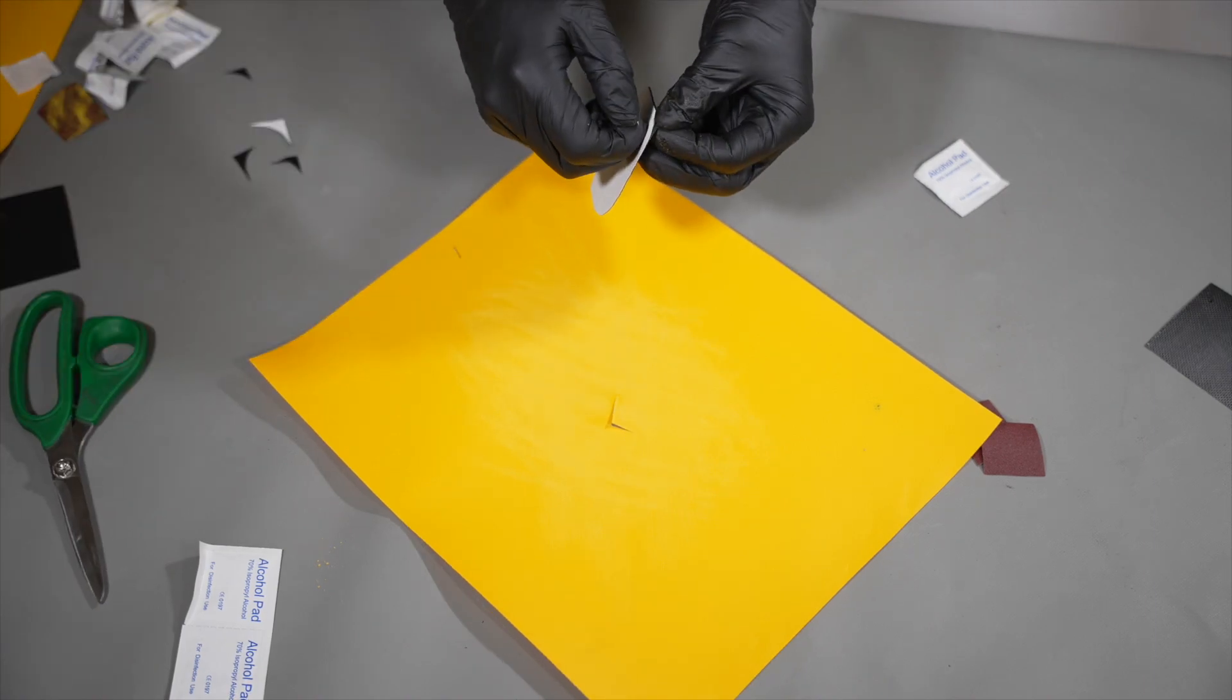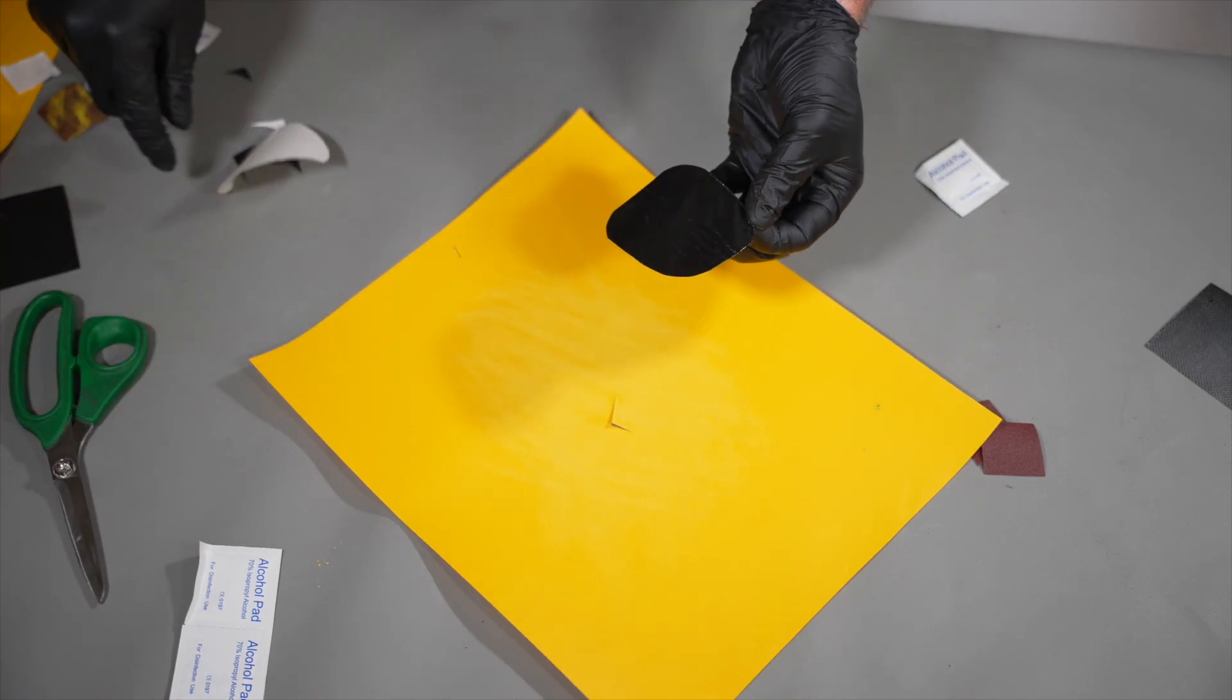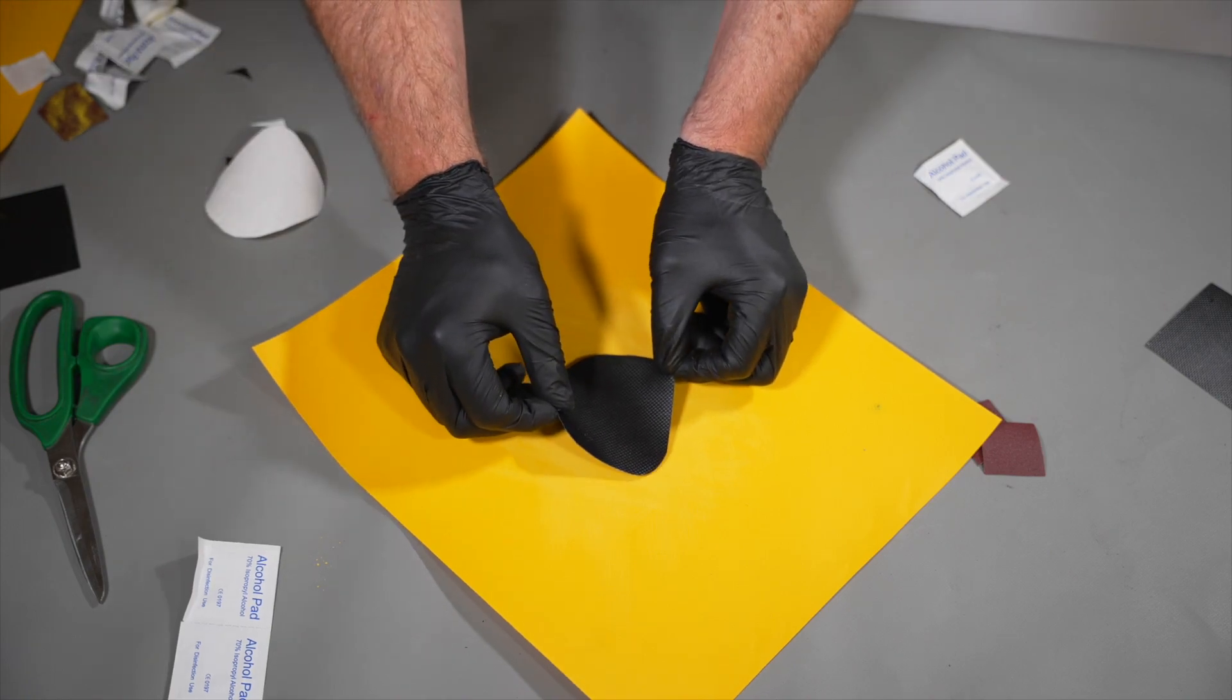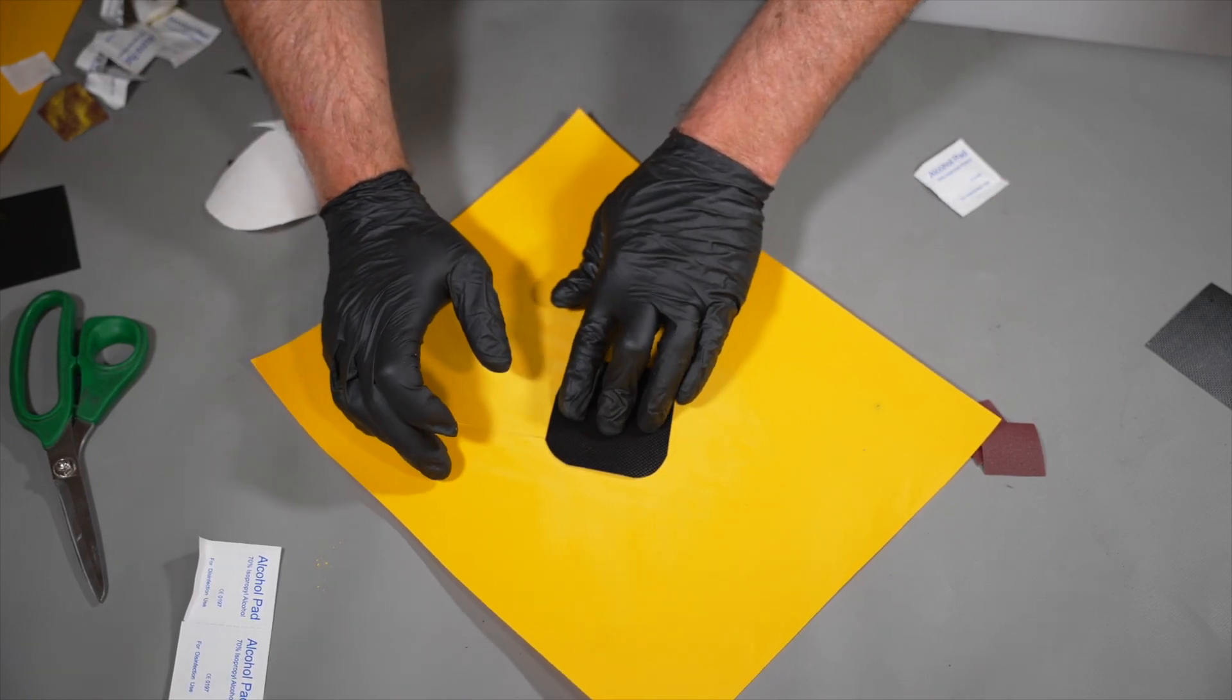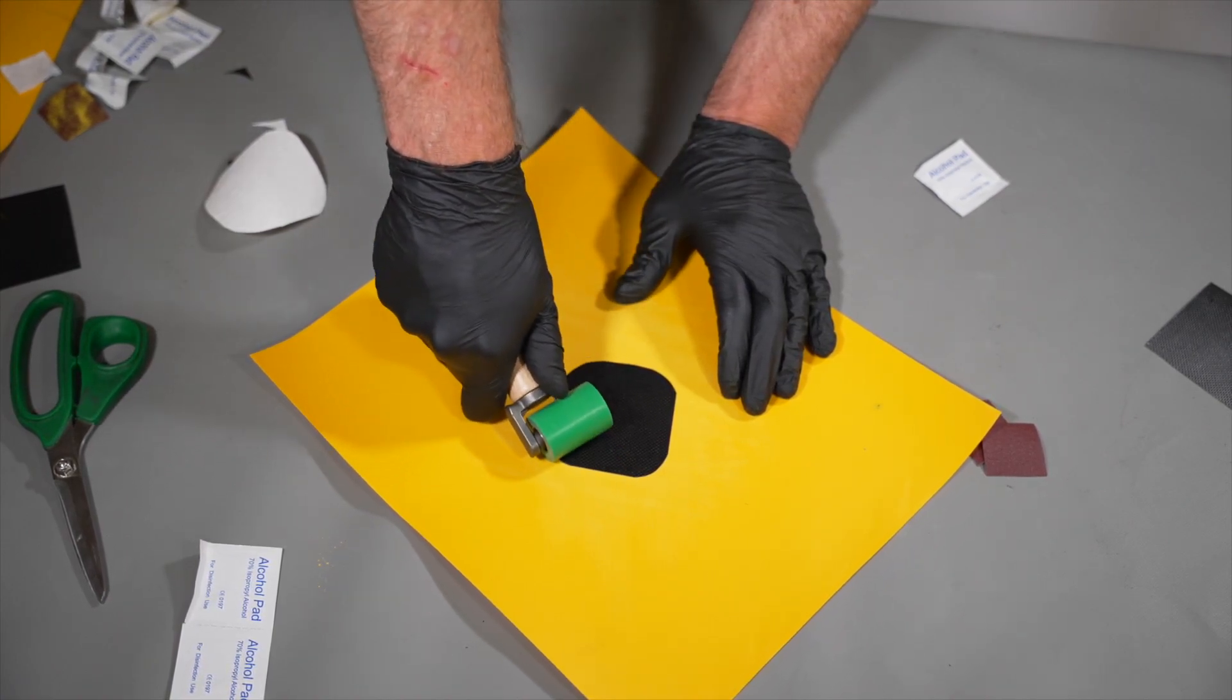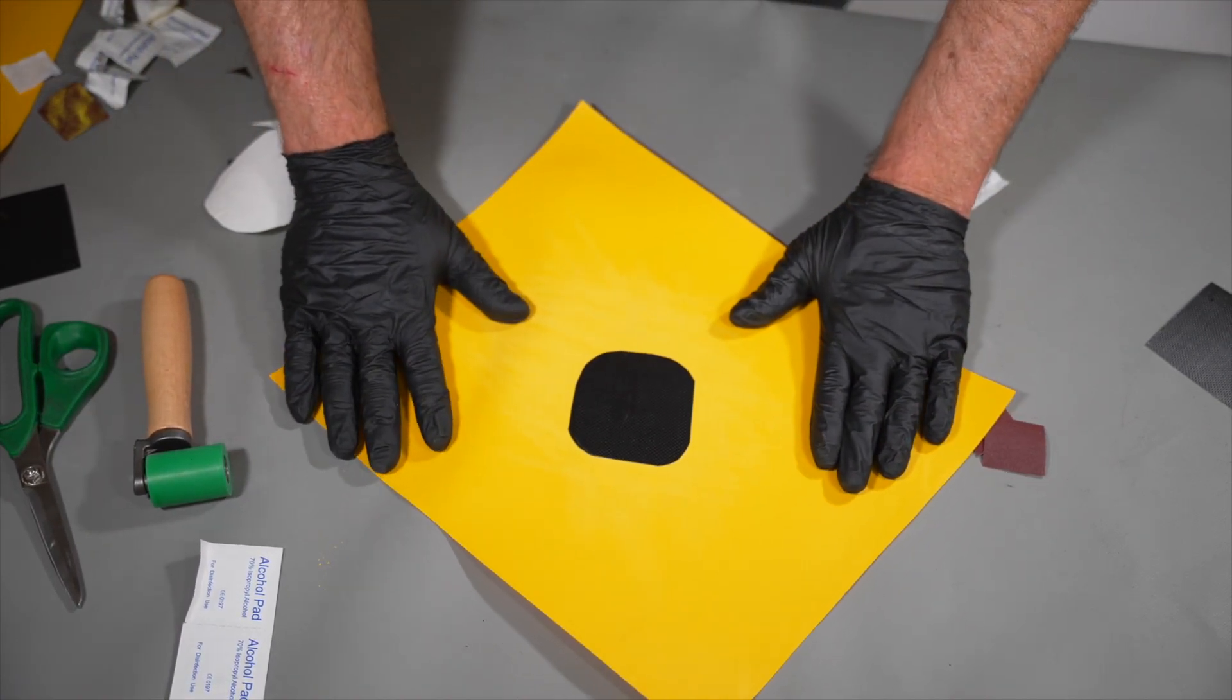To apply the stick-on patch, peel the paper from the back, center it over the hole, and roll onto the surface of the diversion tube. Rub out any bubbles or air pockets and your stick-on patch has been properly installed.